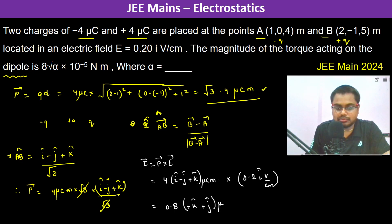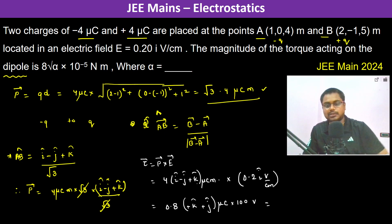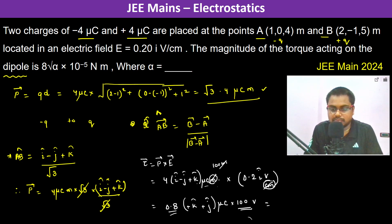So the result is 0.8 in the (J cap + K cap) direction. The units are microcoulombs × volt/centimeter. Converting centimeters: we multiply by 100 centimeters per meter, so the factor becomes 100. Thus the torque is 0.8 × 100 = 80 into 10 to the power minus 6, giving 80 × 10⁻⁶ (J cap + K cap) newton·meters.